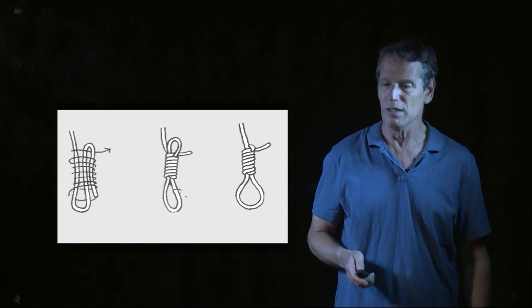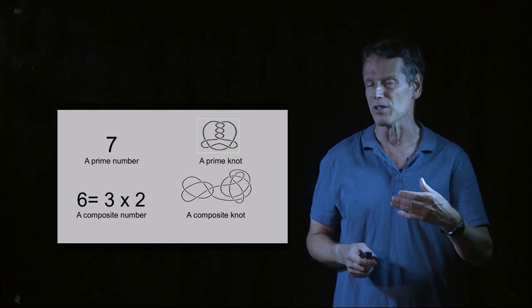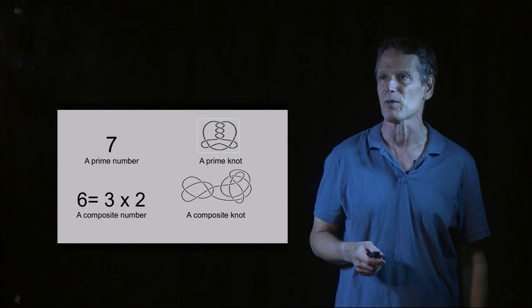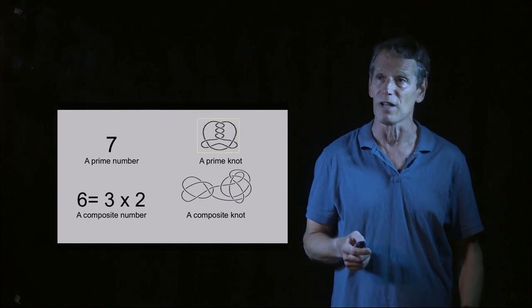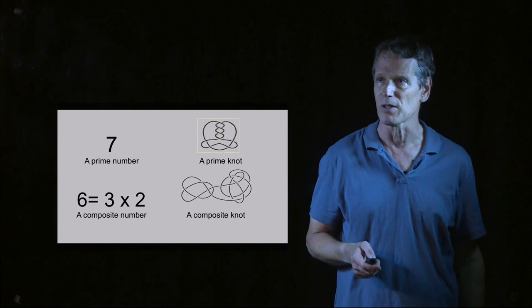So it turns out that just as you have with prime numbers and composite numbers, so seven is a prime number, six is a composite number, you have prime knots and you have composite knots. So we have the same theory reappearing right here.